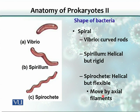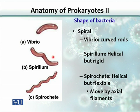The third shape seen in bacteria is spiral. Spiral-shaped bacteria come in three subgroups. If the spiral bend is slight, it is called a vibrio. If there are more than one turn and the bacterium is rigid and not flexible, it is called a spirillum. If it is flexible and has many turns or bends, it is called a spirochete.